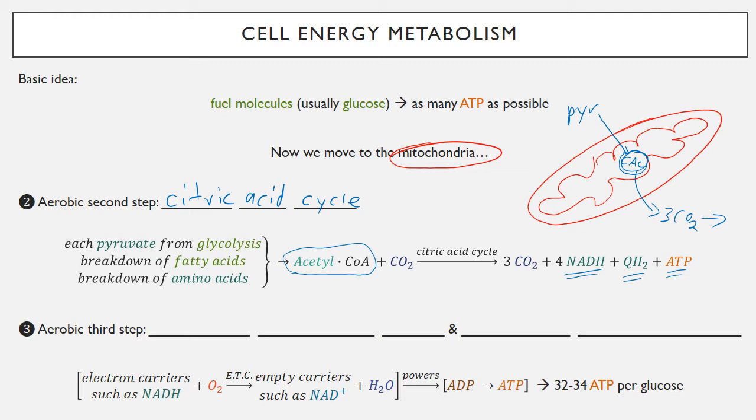For each turn through the citric acid cycle, one acetyl-CoA gets turned into three CO2. But we also produce some more of those electron carriers, the NADH, and another electron carrier called QH2. And we get one more ATP for each pyruvate, so that's a total of two ATP from one glucose.